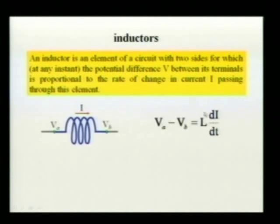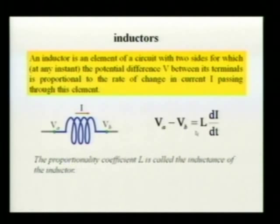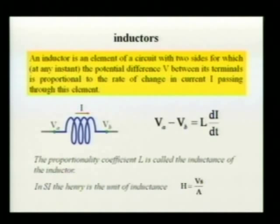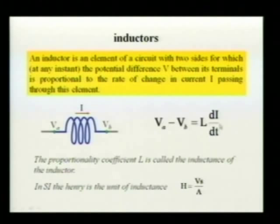The proportionality coefficient between potential difference and the rate of change of current is called the inductance of the inductor. The unit of inductance is the Henry: an inductor has inductance of one Henry if, when current varies at one ampere per second, the potential difference is one volt.